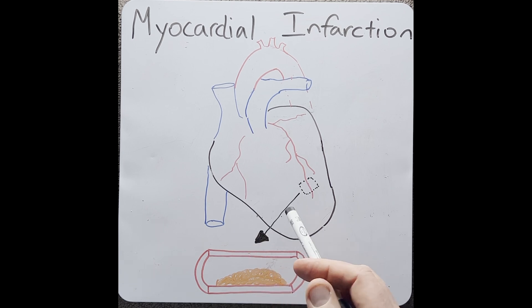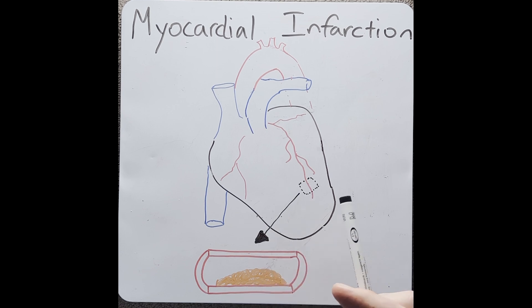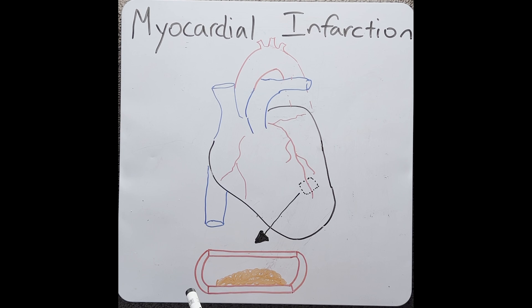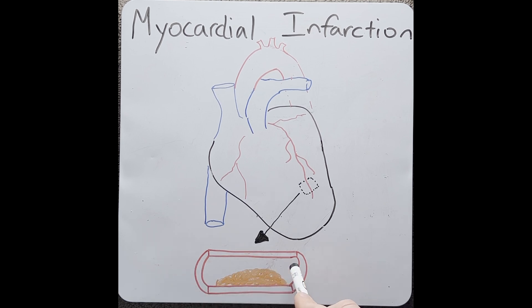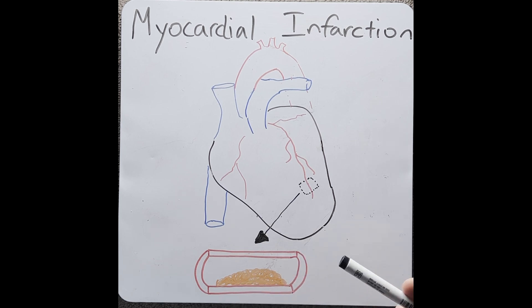The most common cause of ischemic heart disease is when a fatty fibrous plaque starts to build up. Let's zoom in here on this vessel to have a look. Within the vessel — the coronary artery — there is this fatty fibrous plaque that starts to occlude the vessel, so less blood is able to pass through. This leads to a condition known as angina, which we covered in the last video. Angina is when the heart muscle is irritated — this is what causes the chest pain — but there is no muscle death.